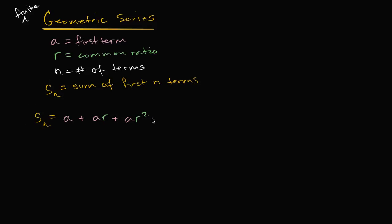We could go all the way to our Nth term. You might be tempted to say it's going to be A times R to the Nth power, but we have to be careful here. Notice our first term is really A times R to the zeroth power, our second term is AR to the first power, our third term is AR to the second power. So whatever term we're on, the exponent is that term number minus one. So if we're on the Nth term, it's going to be AR to the N minus 1 power.